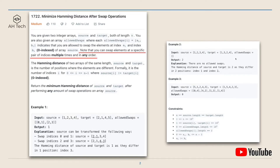For example two, the allowSwaps array is empty, so the minimum Hamming distance we can get is the Hamming distance of the original source and target array, which is two. For example three, with those inputs we're able to get a minimum Hamming distance of zero.